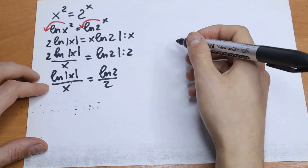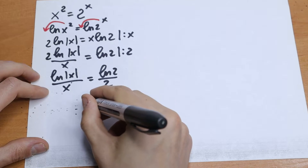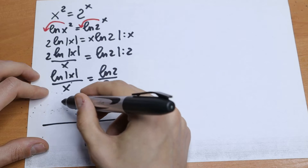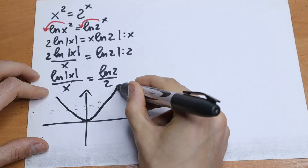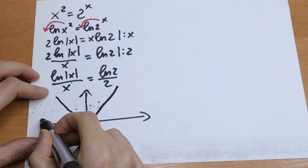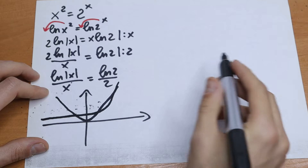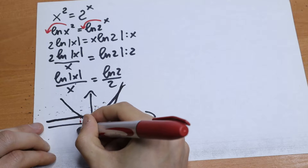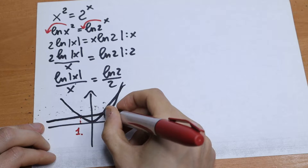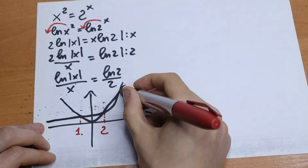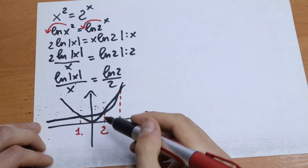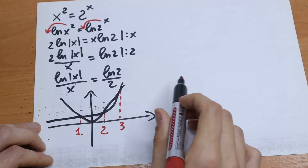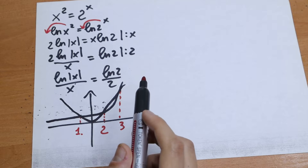I want to suggest you look at the graph here. So let's draw a little graph. We have x squared, which will be our parabola, and 2 to the power x is an exponential function like that. We will have the first root here, maybe a second root here, and maybe a third root here, because this parabola and the exponential curve intersect at one, two, three points.